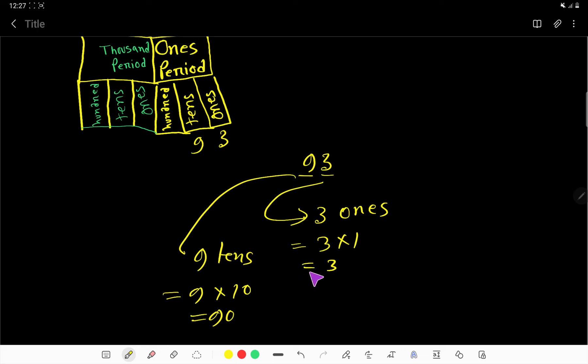You can write the place value of any number like this. Look, here is the practice to write the place value. So for the place value of 9, write the number itself, then count the digits after 9. After 9 we have 1 digit, so we add one 0. And for place value of 3, write the 3, and after 3 there is no digit, so you don't need to add 0 here.